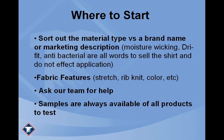The next thing we need to look at is fabric features. What does your fabric do? What is the unique thing about it — is it stretchy, is it a rib knit, is it brightly colored, maybe it's sublimated? Once you've got your type of material — not wicking, not dry fit — and your fabric features, then you call our team and ask for help.